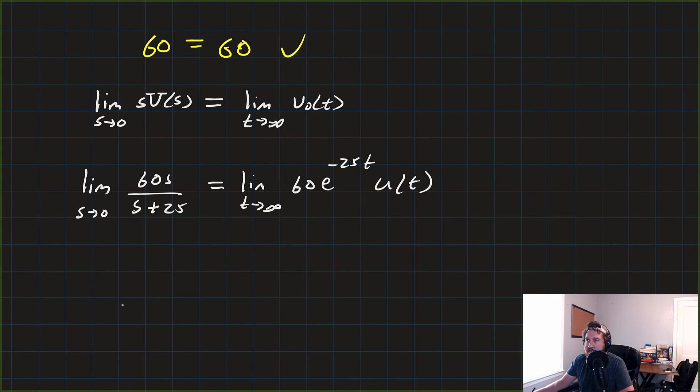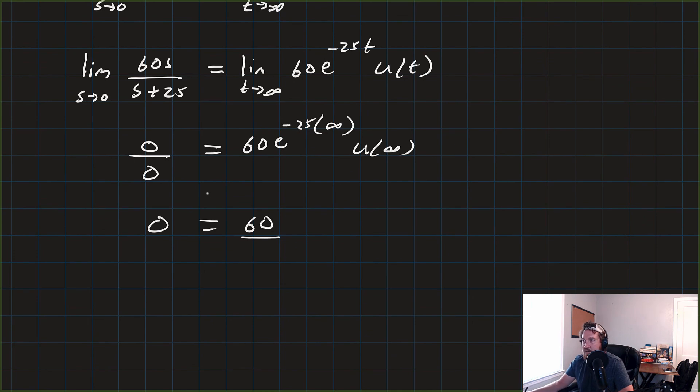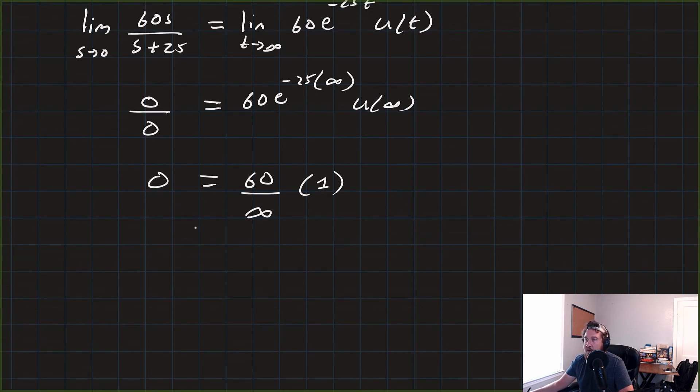On the left-hand side, we're going to get 0 times 0, so that's just 0 over 0. That's going to be 0 on the right-hand side. And then we're going to have 60e to the minus 25 times infinity U to the infinity. So we'll have 0 is equal to 60 over, remember, minus 25 puts the exponent there in the denominator, so it's going to be 60 over infinity. 60 times 1, and anything over infinity is equal to 0, so we get a final result. 0 is equal to 0.